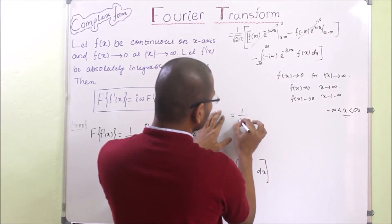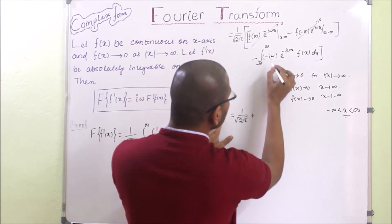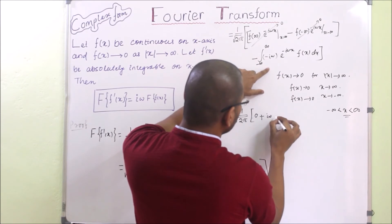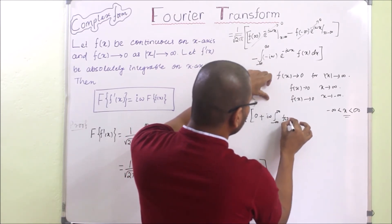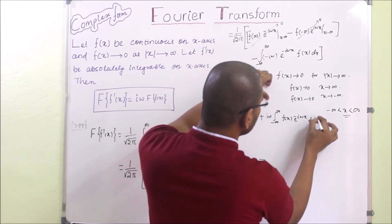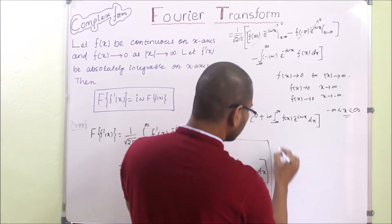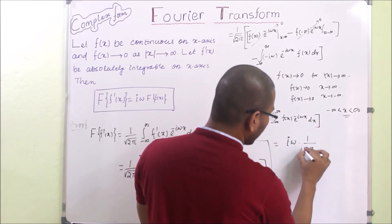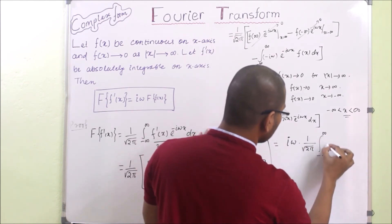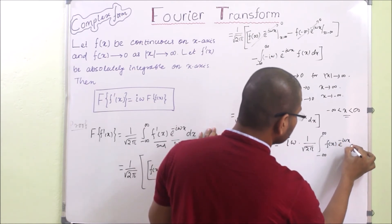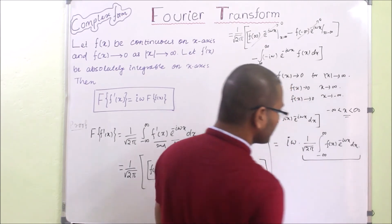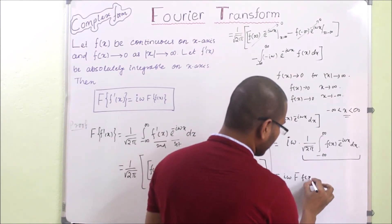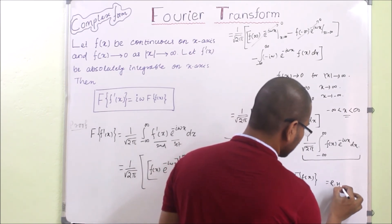So finally what we get is (1/√2π) times 0 plus iω times the integral from −∞ to +∞ of f(x)·e^(−iωx) dx. Rearranging, this becomes iω times (1/√2π) times the integral from −∞ to +∞ of f(x)·e^(−iωx) dx. But this integral is nothing but the Fourier transform of f(x). So we get iω times the Fourier transform of f(x), which is our right-hand side — and the formula is proved.